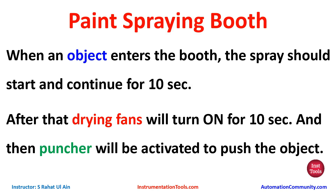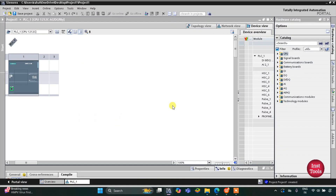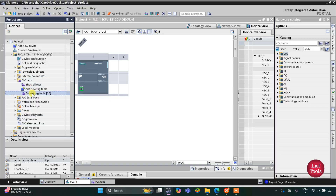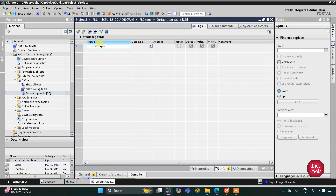For this example we will use normally open contacts as well as normally closed contacts. We will also be using some timers like TP and TON. Let's move to TIA Portal where we will draw a ladder diagram for this example. This is the interface of TIA Portal version 16.